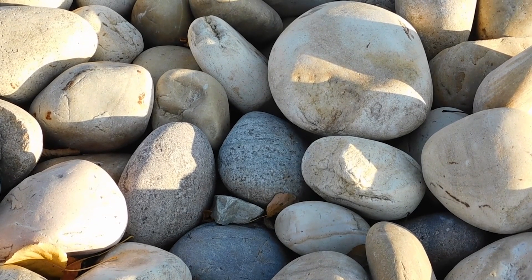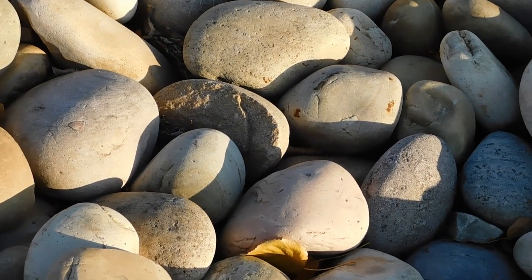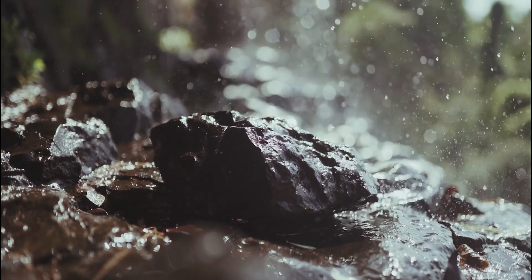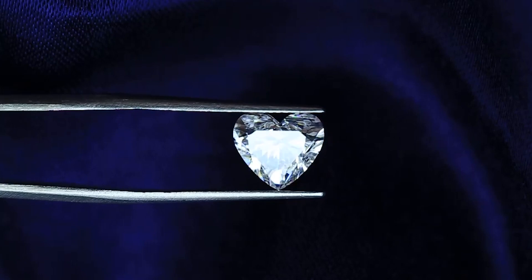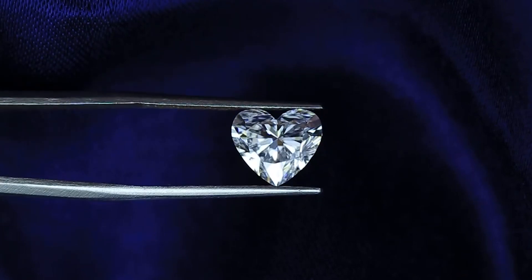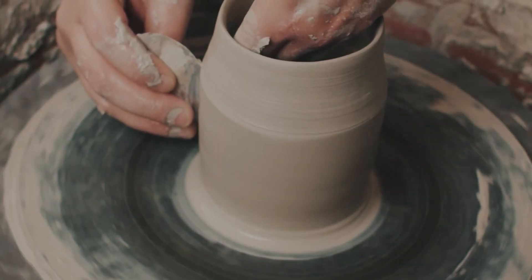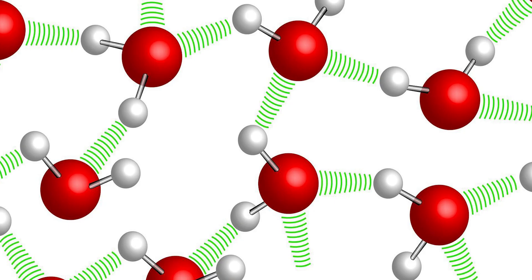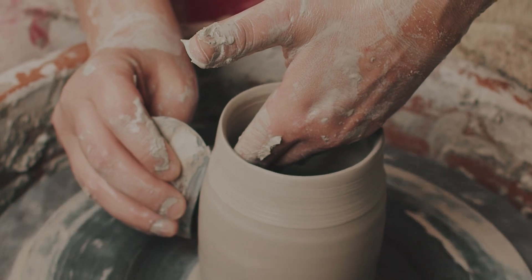Covalent solids are held together by strong covalent bonds between the constituent atoms or molecules. These bonds are typically very strong and directional, and as a result, covalent solids tend to be very hard and have high melting points. Diamond is an example of a covalent solid, known for its hardness and high thermal conductivity. Non-covalent solids, on the other hand, are held together by weaker forces such as van der Waals forces, hydrogen bonds, or electrostatic interactions. Non-covalent solids tend to have lower melting points and be more malleable than covalent solids.